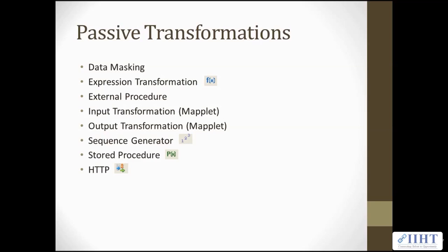The Input transformation defines maplet input rows. The Output transformation defines maplet output rows. The Sequence Generator generates primary keys. The Stored Procedure transformation calls a stored procedure. While the HTTP transformation connects to an HTTP server to read or update data.